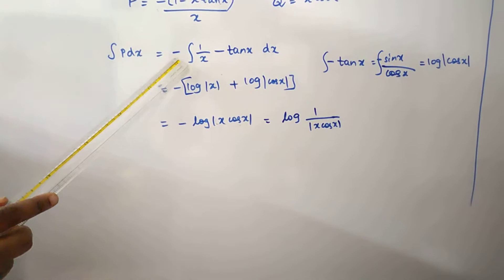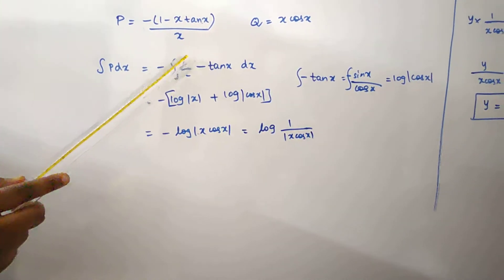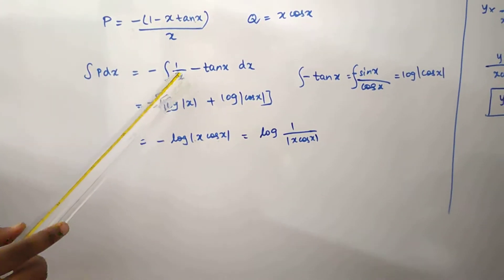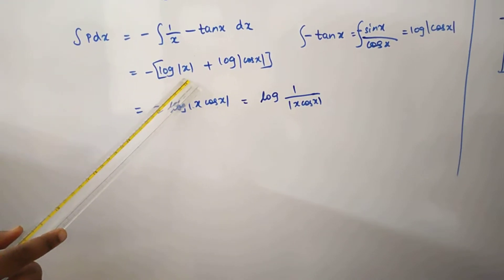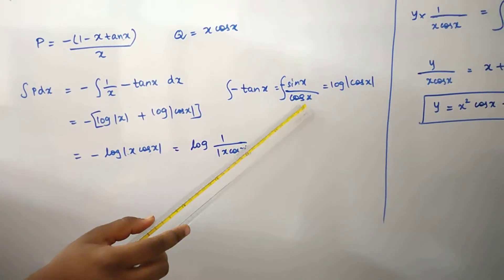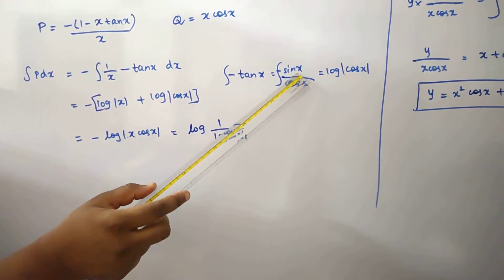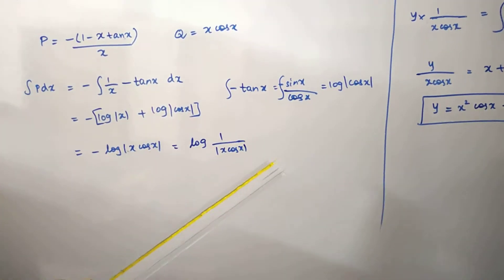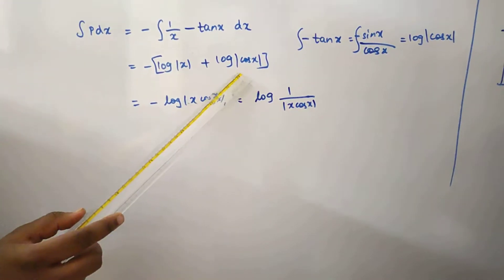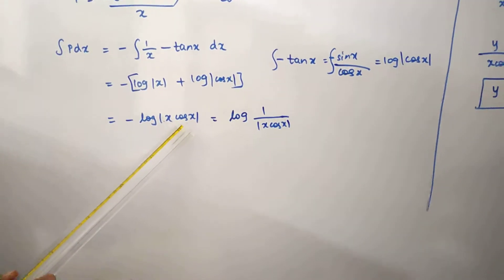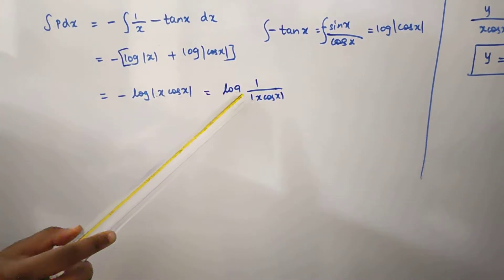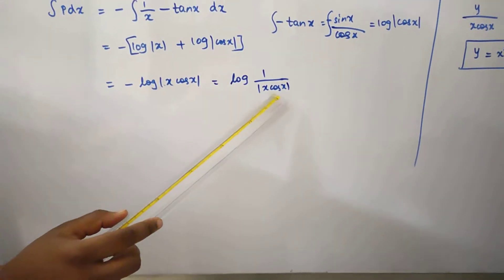Now, integral of P dx equals minus of (1/x minus tan(x)) dx. The 1/x integration gives log|x|, and minus tan(x) equals minus sin(x)/cos(x), where cos(x) differentiates to minus sin(x). So integral P dx equals minus log|x| plus log|cos(x)|, which by log rules equals log|cos(x)/x|, or equivalently log(1/(x·cos(x))).